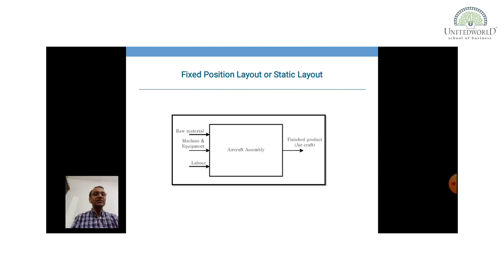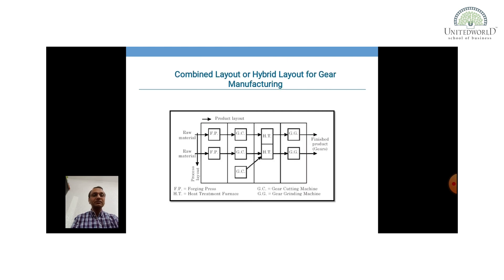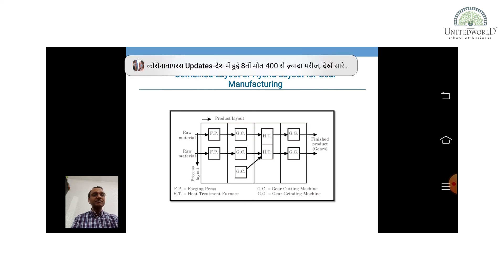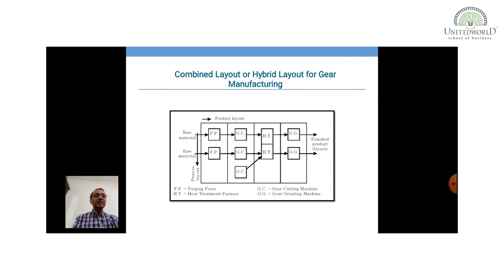Fixed position layout (static layout) — for example, aircraft assembly: you bring man, machine, and material to the place where the product is being built. It is like project layout, where you move to the location — for instance, building a bridge must be done at the site, not elsewhere. Combined layout uses both product and process layouts together: raw material goes through press, heat treatment furnace, gear cutting machine, and grinding machine in a sequential process order.